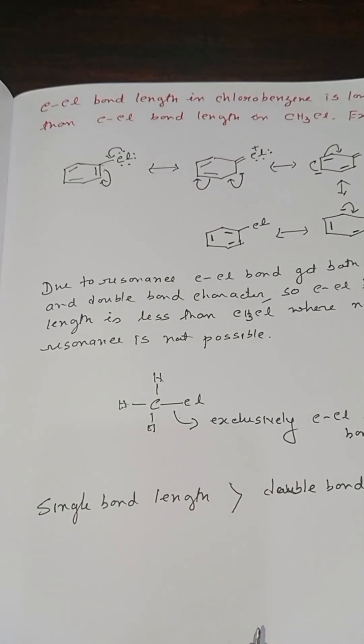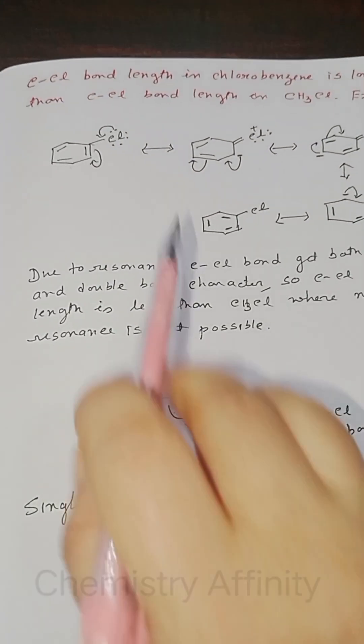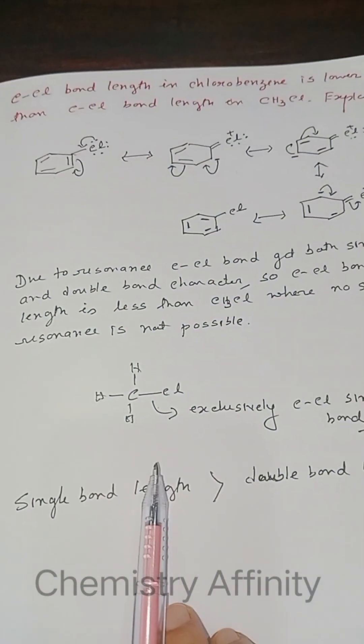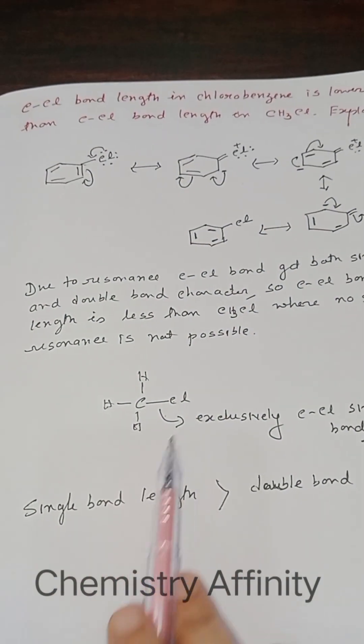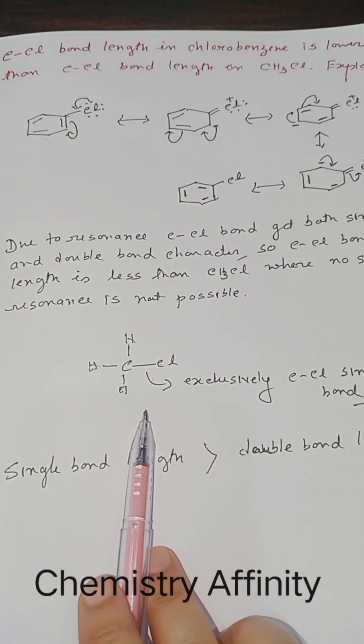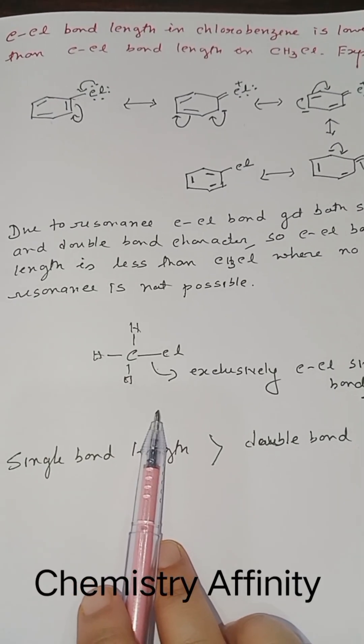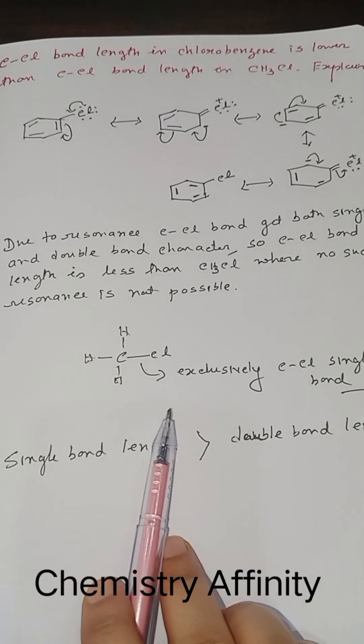So I hope now the explanation is clear as to why the carbon-chlorine bond length in chlorobenzene is less than the carbon-chlorine bond length in methyl chloride. I think this video will be helpful for your exam preparation.